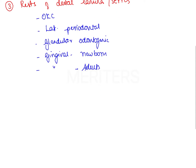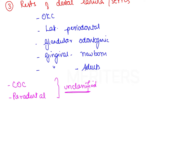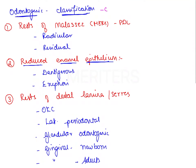Two other cysts — calcifying odontogenic cyst and paradental cyst — are considered unclassified cysts because of their non-specific origin. This overall classification is based on origin: whether the cyst originates from rests of Malassez, reduced enamel epithelium, or rests of the dental lamina. These are the three important sources as points of origin of odontogenic cysts.